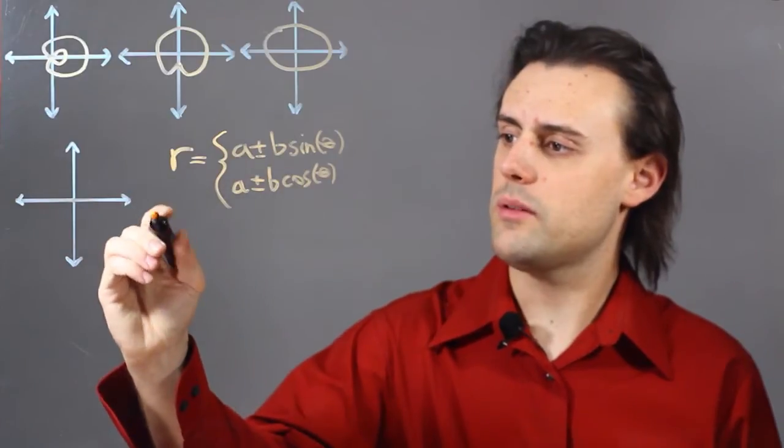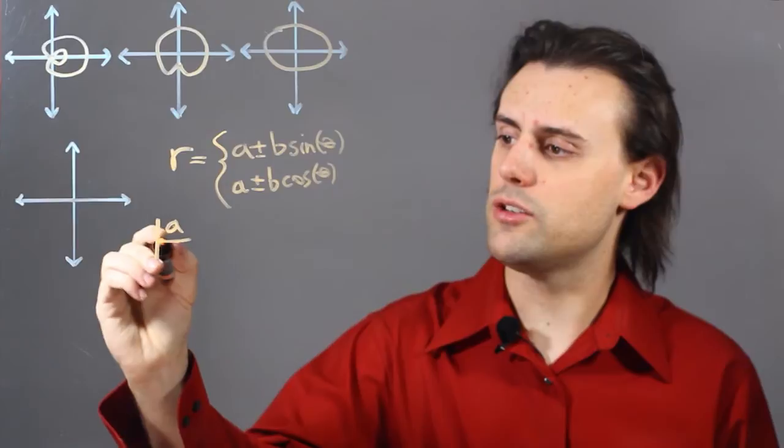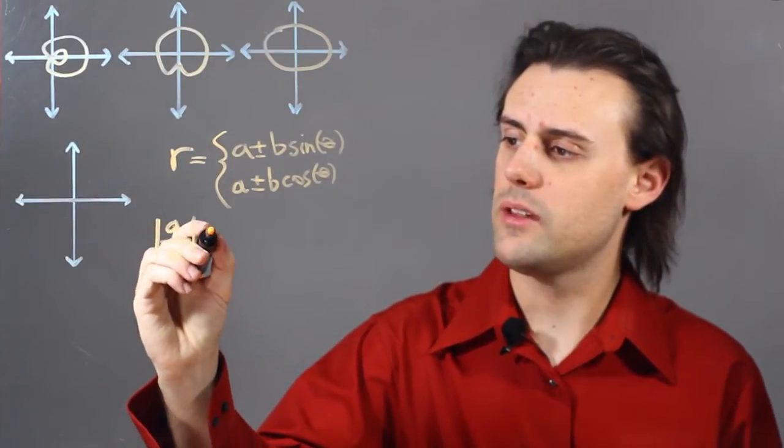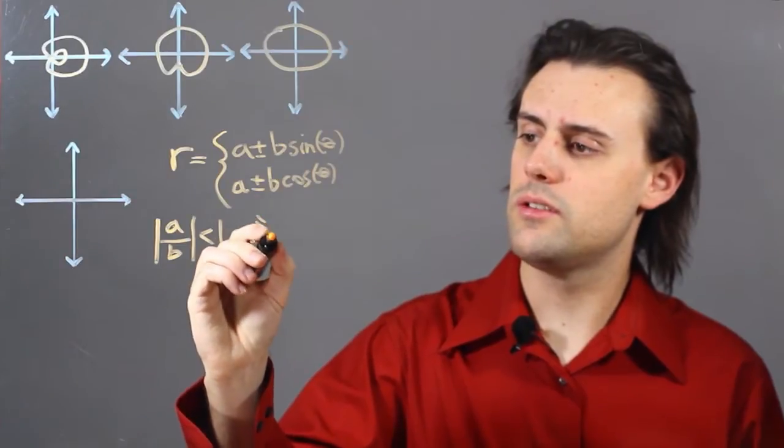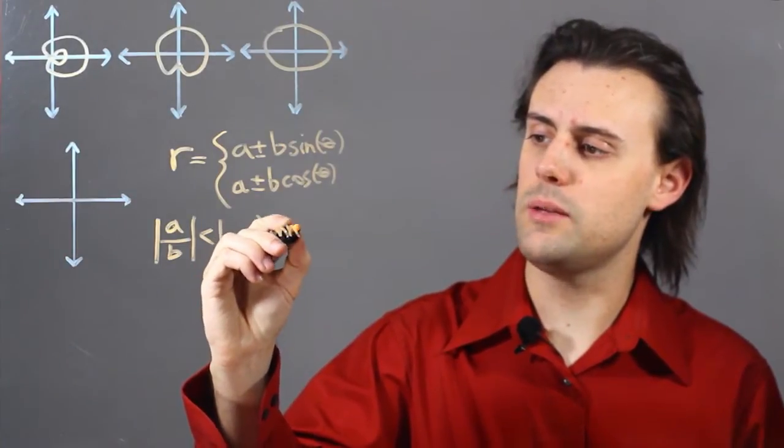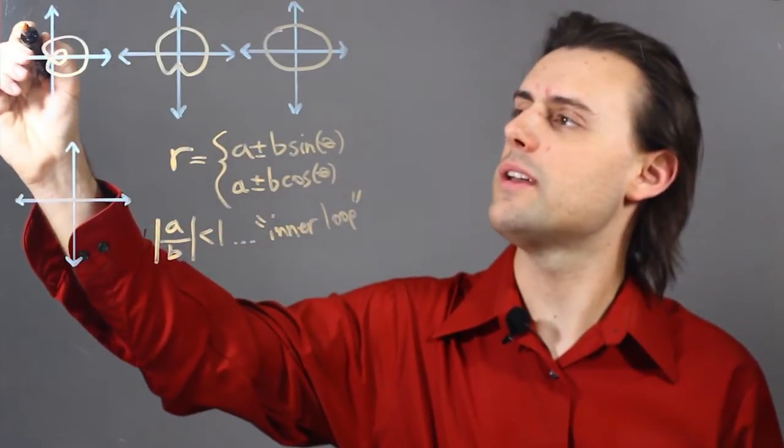The first type considers the case where the magnitude of the ratio a over b is less than 1, and this is going to be a Limasson with an inner loop, which is this case right here.